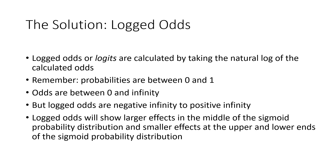Logged odds are calculated by taking the natural log of the odds. To review: probabilities are always between 0 and 1, and odds are always between 0 and infinity. But when we take a logit — when we log the odds — we end up with a distribution that goes from negative infinity to positive infinity, and it's through this mechanism that we can fit the sigmoid distribution.